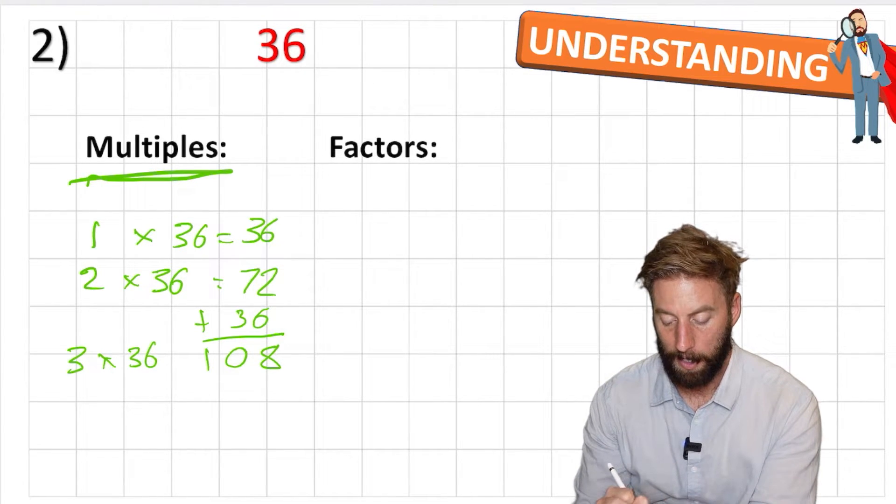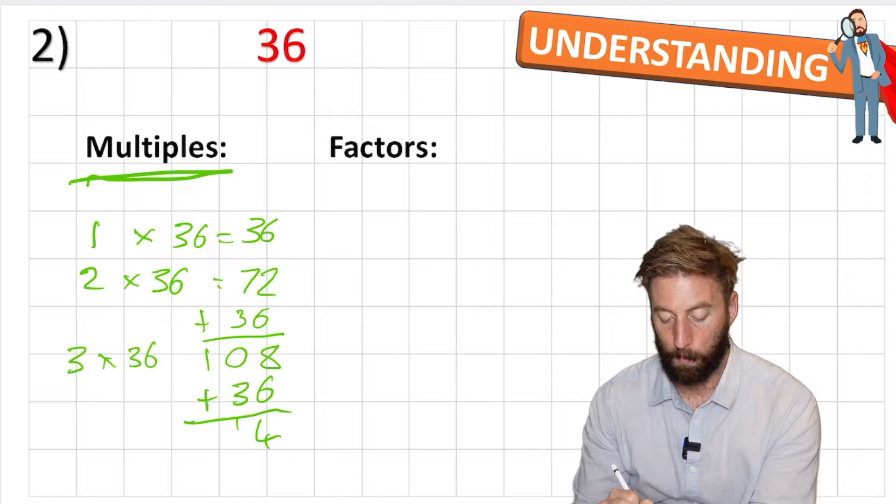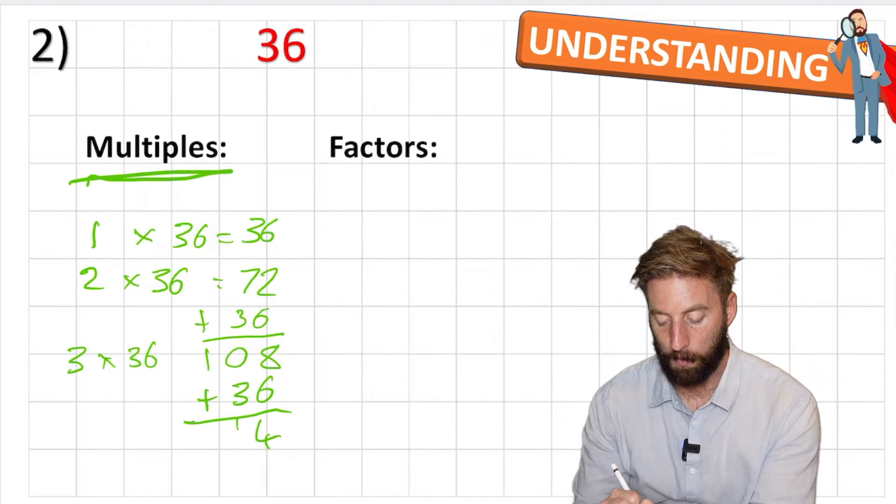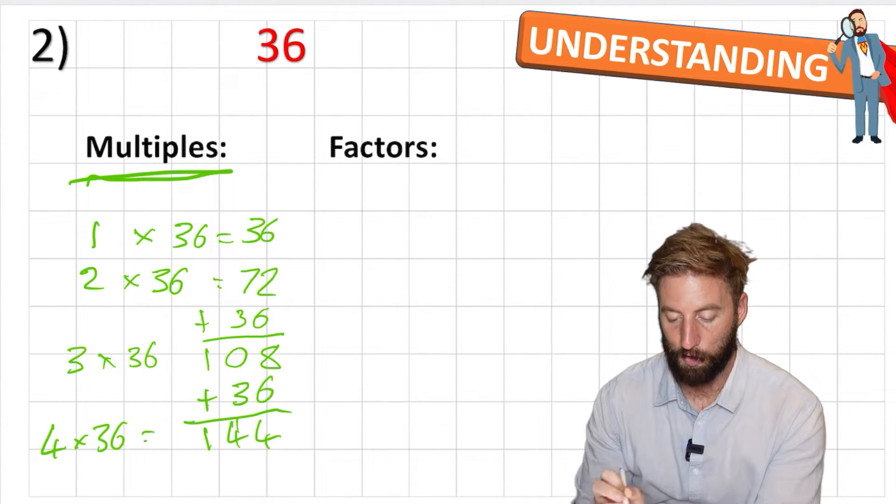So therefore that would be 3 times 36 and another multiple of 36. Let's do one more. So if we add 36 to this, 8 and 6 is 14, 0 add 3 add the 1 is 4, 1 add nothing is 1. So 144. So 4 times 36 is 144.